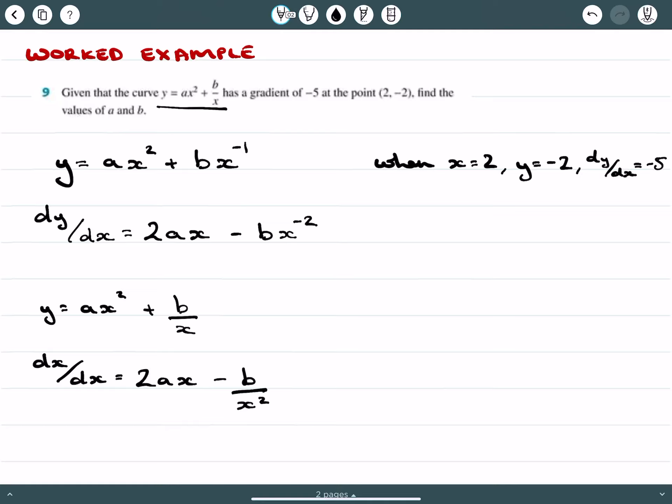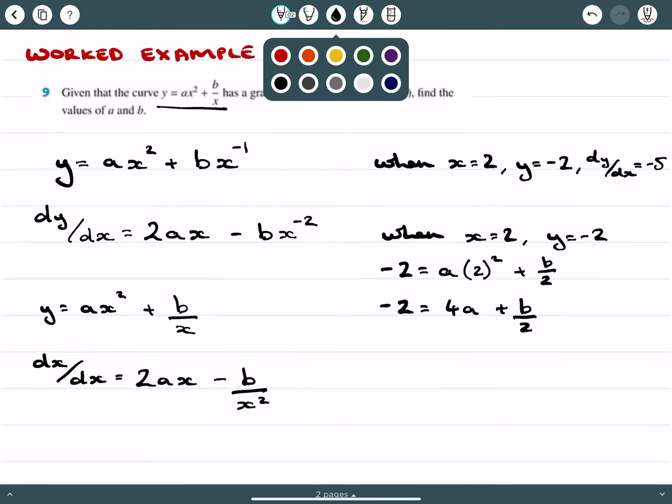When x equals 2, y equals negative 2, this gives me negative 2 equals 4a plus b on 2. This is taken from the y equation.